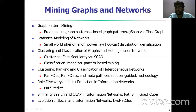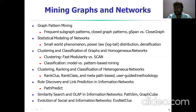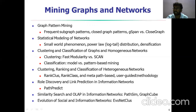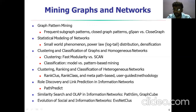Next is mining graphs and networks. Here we apply graph pattern mining, which includes frequent sub-graph patterns, closed graph patterns, G-span, and closed graph techniques. We also have statistical modeling of networks, clustering and classification of homogeneous networks, clustering, ranking, and classification of heterogeneous networks, link prediction in information networks, similarity search using OLAP in information networks, and techniques like PathSim, PathScan, and GraphCube.